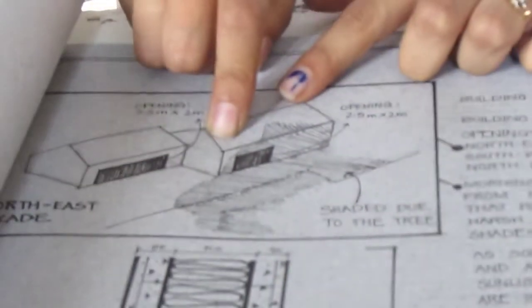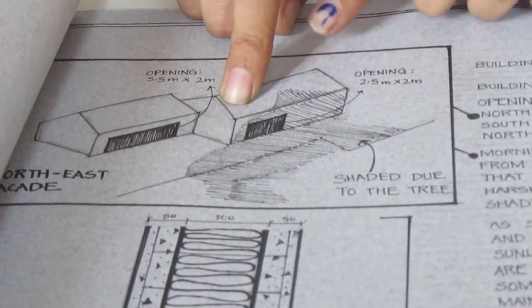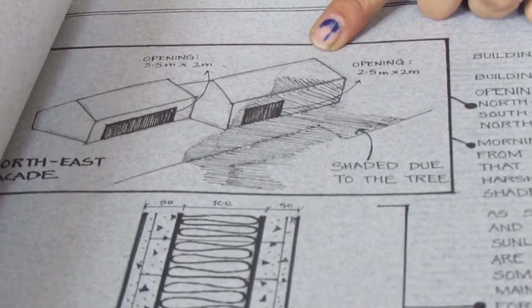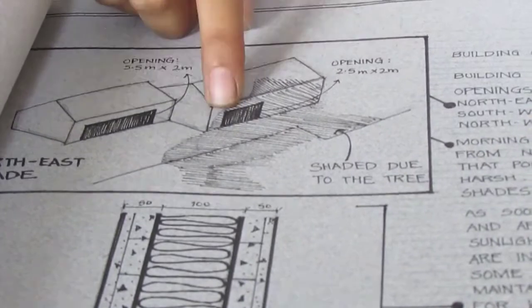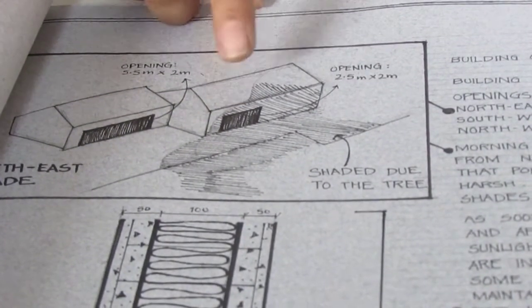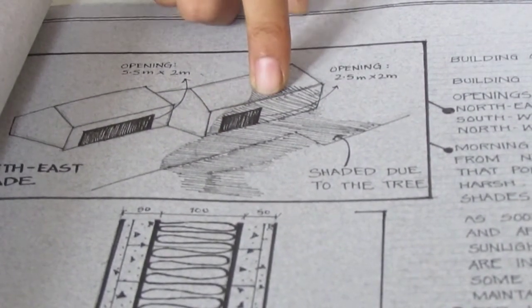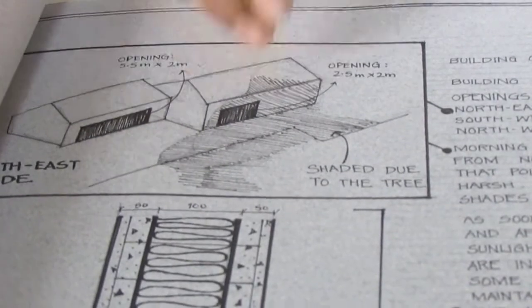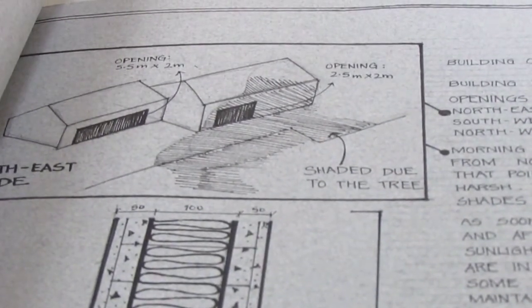Because of which I had no reason to create an extra shading device. When the harsher rays were coming on the window or the doors, there was no need for a shading device because the area was already shaded.